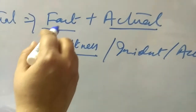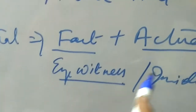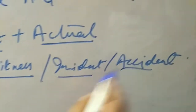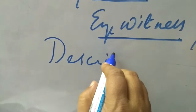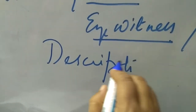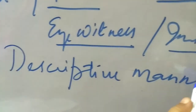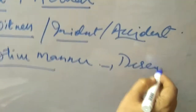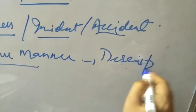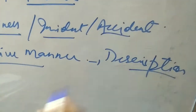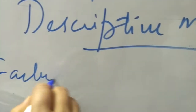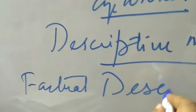These incidents or accidents which you have seen with your own eyes — when you write these incidents in a descriptive manner, that is known as description. So fact plus actual, written in a descriptive manner, comes together as factual description.